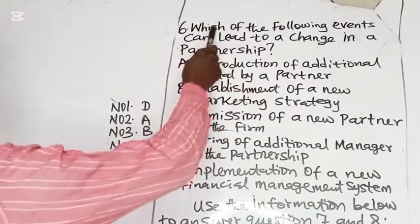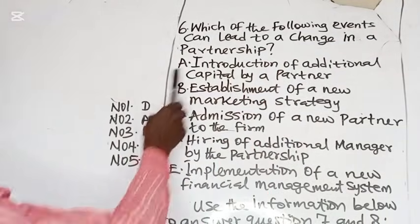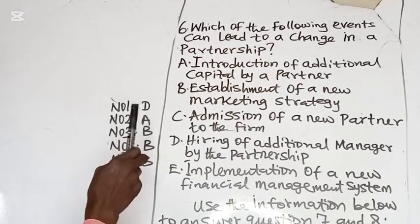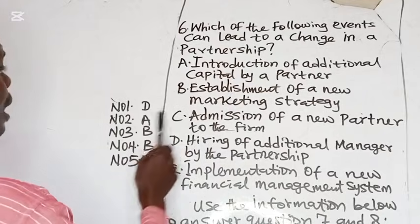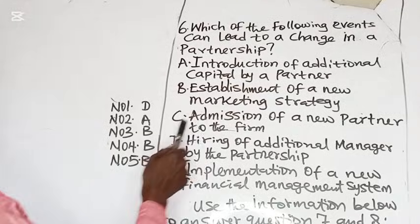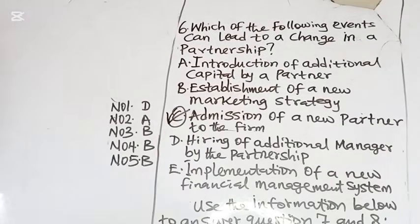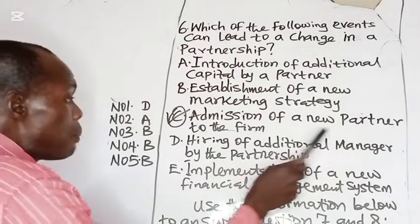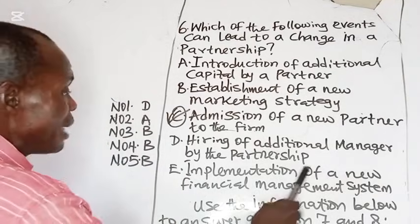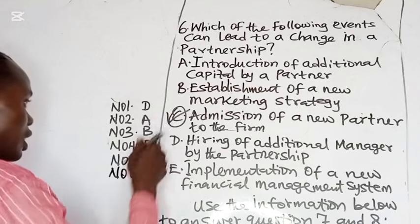Number 6: Which of the following events can lead to a change in a partnership? A: introduction of additional capital by a partner — this cannot lead to a change in partnership. B: establishment of a new marketing strategy — no. C: admission of a new partner to the firm — yes, this will lead to a change in partnership. D: hiring of an additional manager — no. E: implementation of a new financial management system — no. The correct answer to number 6 is C.